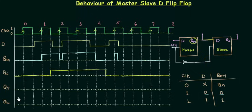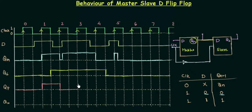At the next rising edge D is high, so QP goes high till the following rising edge. At that rising edge D is low, so QP becomes low and remains low. For the next rising edge D is high, so QP goes high and remains high. At the following rising edge D is low, so it goes low. When D is low the output is low; when D is high the output is high.